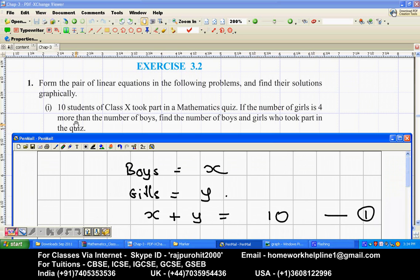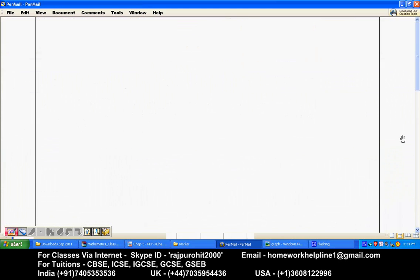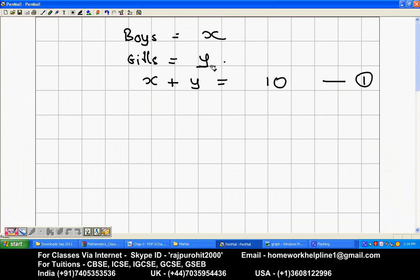The second condition given is if the number of girls is 4 more. Now number of girls is 4 more than boys, so if I subtract girls minus boys I will get 4. So this will give me minus x plus y is equal to 4. This is equation number 2.